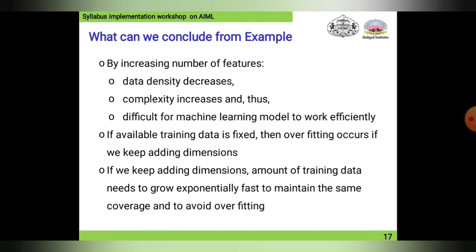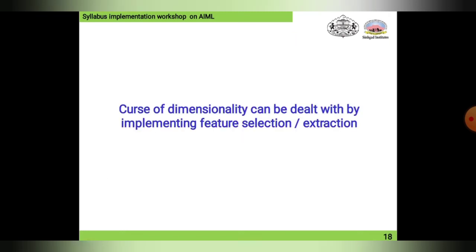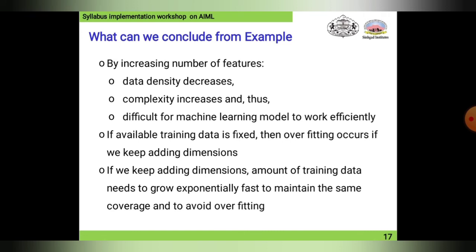The conclusion from these examples: by increasing the number of features, data density decreases and complexity increases, making it difficult for the machine learning model to work efficiently. If the available training dataset is fixed and we keep adding dimensions, overfitting occurs. To avoid overfitting, the amount of training data needs to grow exponentially fast as dimensions increase.